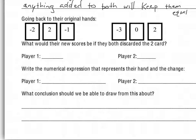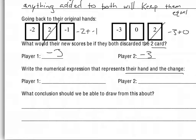Going back to their original hands, what would happen to their new scores if they discarded a 2 — if they took the 2s out of their hands? That's thinking about subtraction. If we take away the 2s, we can think of it as negative 2 plus negative 1 and negative 3 plus 0, giving us negative 3 and negative 3. The original addition was negative 2 plus 2 plus negative 1, then we subtracted away the positive 2. Same thing for Player 2: negative 3 plus 0 plus 2, then subtracted away the 2.